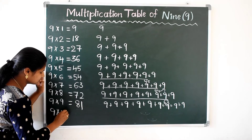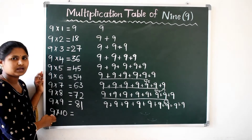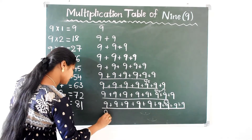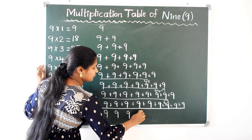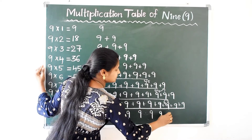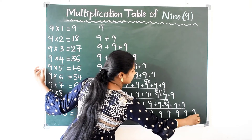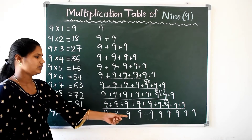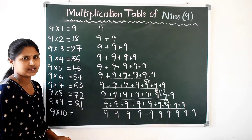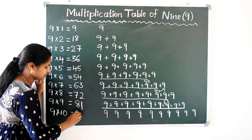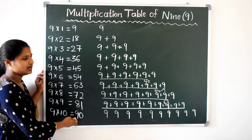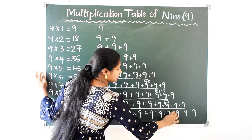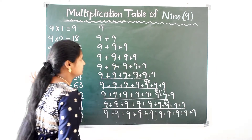Next, 9 10 times. I am writing here 9 — 1, 2, 3, 4, 5, 6, 7, 8, 9, 10. Ok, 9 10's — if we add all these 9's we will get 90. So 9 10's are 90. If we add all these 9's we will get 90.